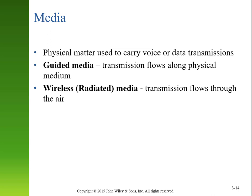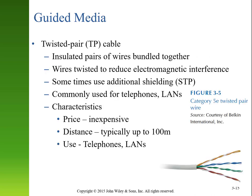Let's talk about the kind of media we can use to transmit our data or, in some cases, our voice. If we are using a physical medium — a wire of some sort — we call that guided media. If we are using some sort of media that flows through the air, we're typically talking about wireless or radiated media. The most common type of guided media in a network environment is twisted pair cabling.